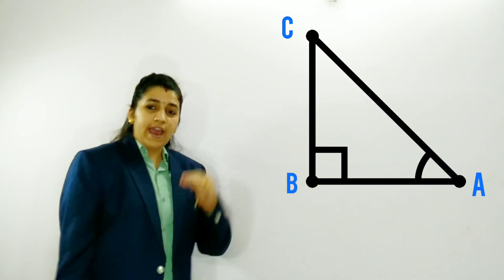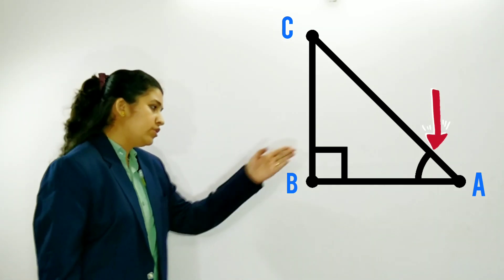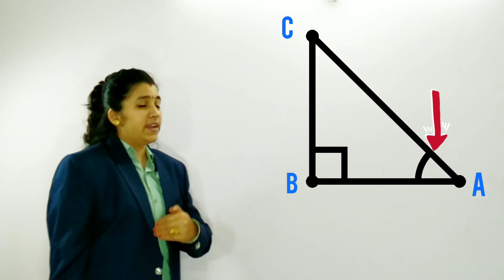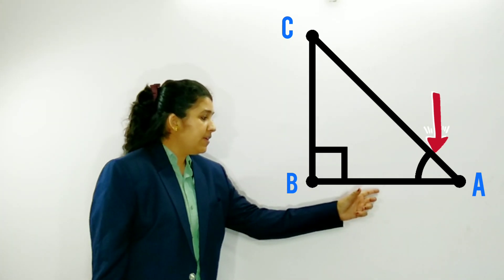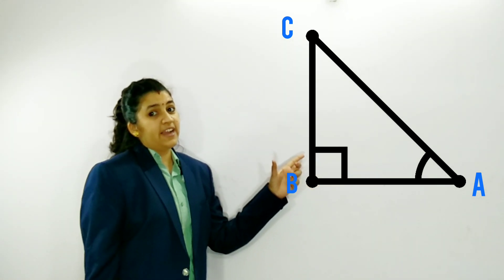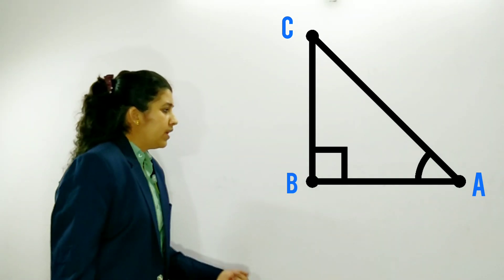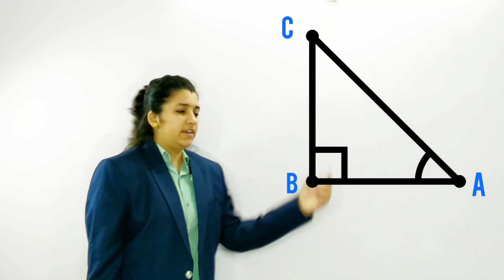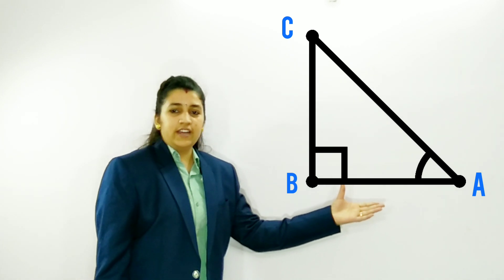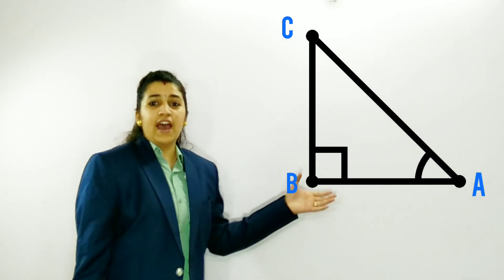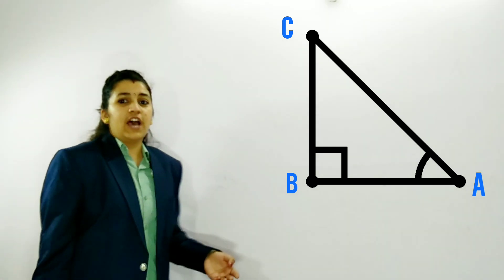If I talk about the trigonometric ratios of this angle, then the side in front of this angle is the perpendicular side — that is BC. The base of this angle is AB and the hypotenuse is AC.